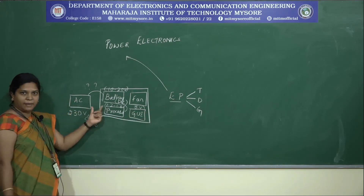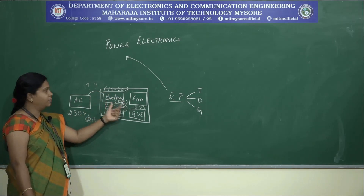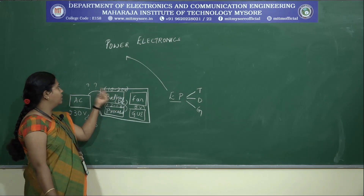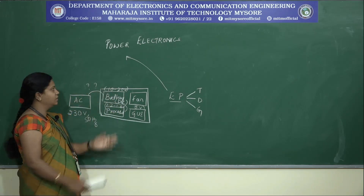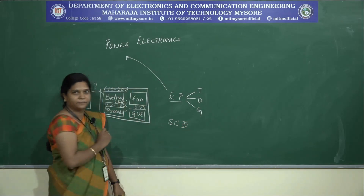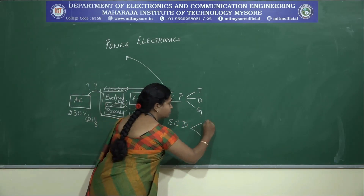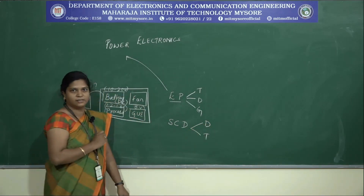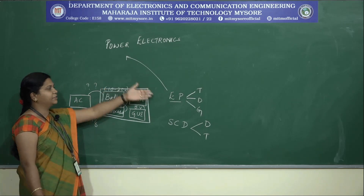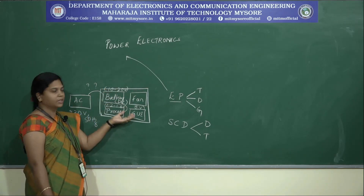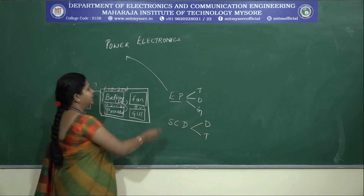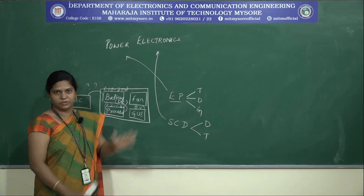Coming back to the example, we have the battery and the laptop in which the battery is being charged by an AC supply. We have an AC supply that we need to convert into a DC supply. In order for this conversion action to take place, we require some semiconductor devices. Semiconductor devices we already know are diodes and transistors. Like these, we have many more semiconductor devices which help in the process of converting electric power from one form to another. This conversion of power with the help of semiconductor devices deals with the electronic part of the subject.